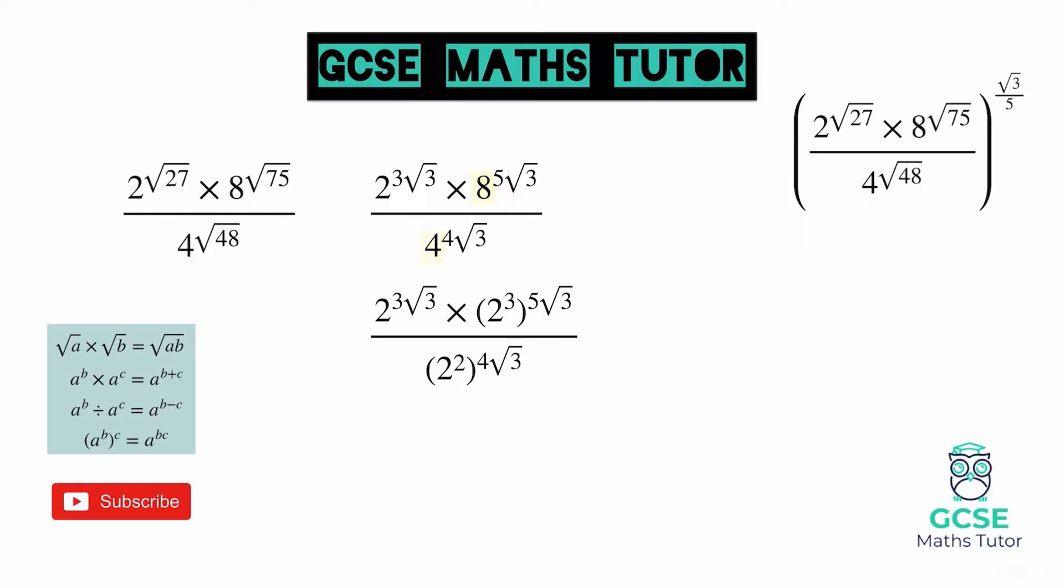So straight away, let's change them. And when you change them like this, you want to put them into a bracket. So 8 has become 2 cubed, and 4 has become 2 squared. Now we can apply that last indices rule that we had there, and that is multiplying out those powers.